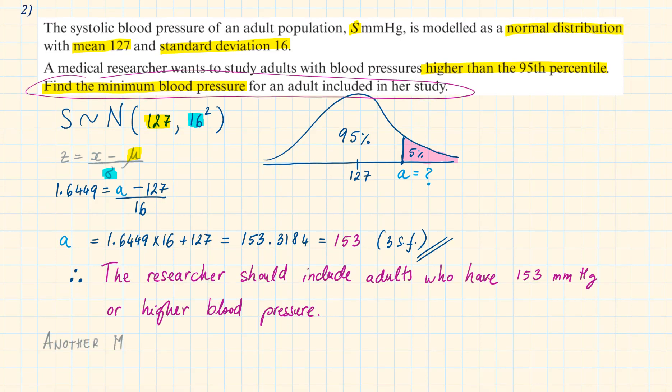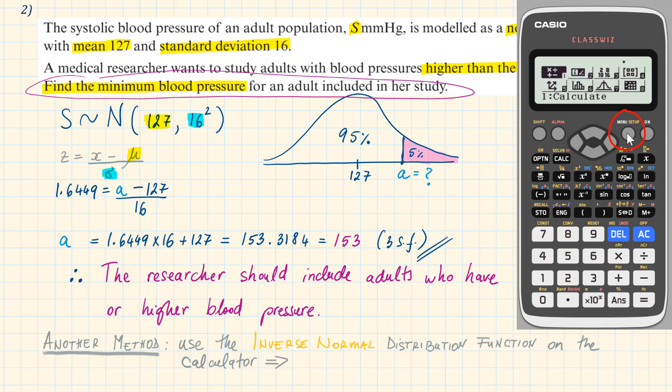We can use another method to work this out. Use the inverse normal distribution function on the calculator. Go to menu then 7 for distribution then choose inverse normal, type in the area for the left tail which is 95%, standard deviation σ = 16, mean μ = 127, and press equal. This will give us the same answer that we have worked out from the table.